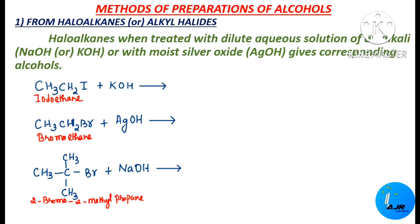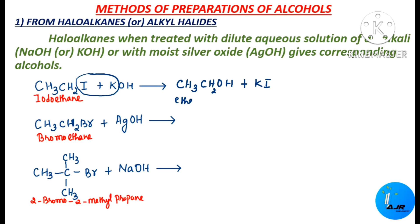Let us see some examples. This is iodoethane, a haloalkane or alkyl halide. When iodoethane is treated with potassium hydroxide, KI will be removed and finally we get CH3CH2OH — that is ethyl alcohol or ethanol. The next example is bromoethane; when bromoethane is treated with moist silver oxide, we get ethanol CH3CH2OH plus silver bromide (AgBr).